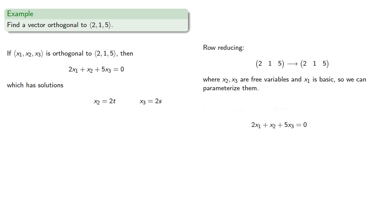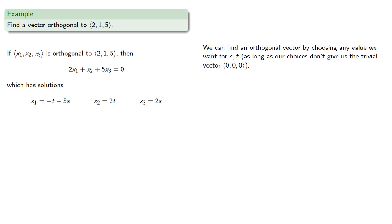and the one and only row of our system gives us the equation 2x1 + x2 + 5x3 = 0. So substituting in the values for x2 and x3, we can solve for x1.